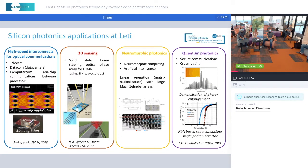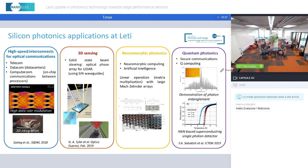Silicon photonics is a prominent technology for a wide range of applications. At Leti, originally silicon photonics was developed for high-speed interconnects for optical communications, but now Leti's silicon photonics platform is ready to address other challenges relating to three-dimensional sensing such as LIDAR technology, or neuromorphic photonics, and even quantum photonics.